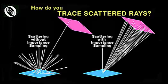Importance sampling allows you to control which scattered rays are traced and where they are traced. In ASAP NextGen, you can define importance areas or directions and only trace the scattered rays that travel toward them. To calculate the correct irradiance for any size and location of an importance area,